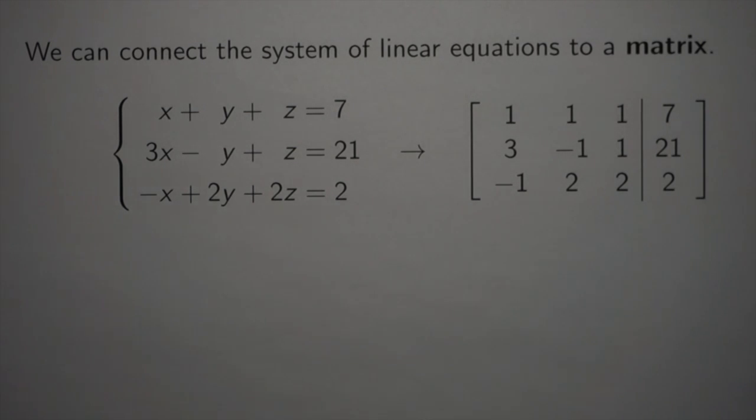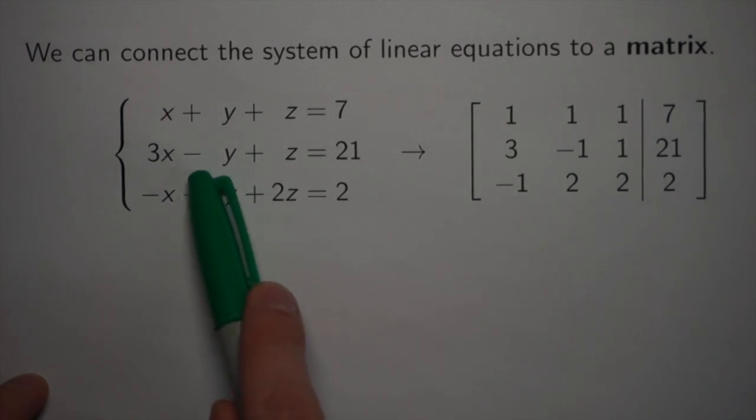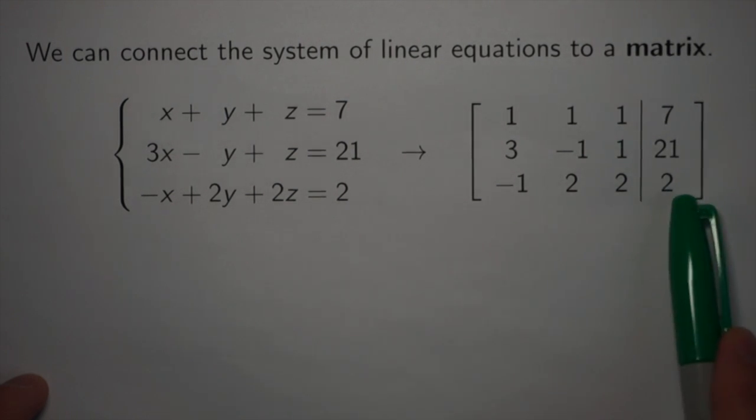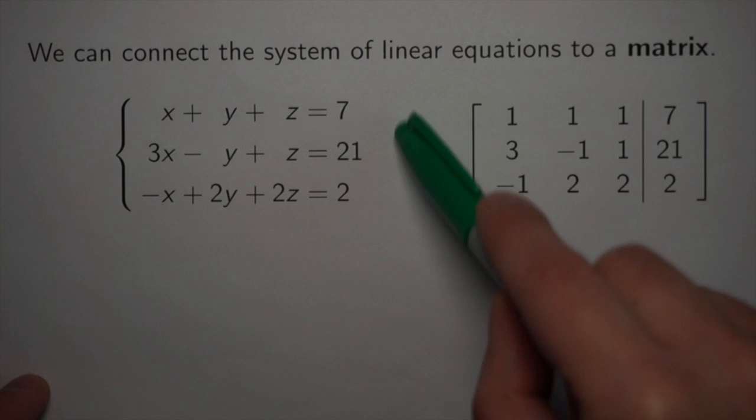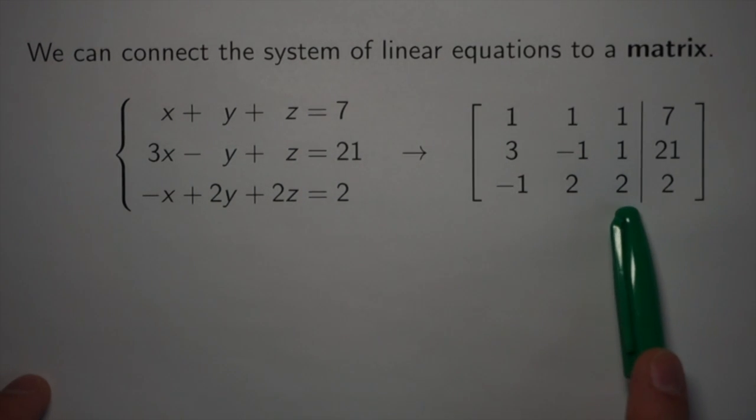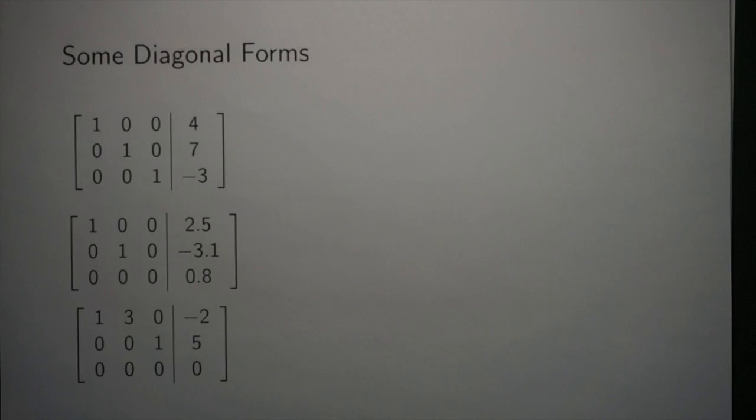We can connect the system of linear equations into a matrix, a matrix just being a collection of numbers, by pulling out the coefficients and putting them into an array. All of the coefficients and all the right-hand sides become numbers in our array, and we differentiate the right-hand side from the rest of the coefficients by just drawing this vertical line. The goal of Gaussian elimination is to get all of our matrices into diagonal form, and this is what diagonal form will look like for a matrix.